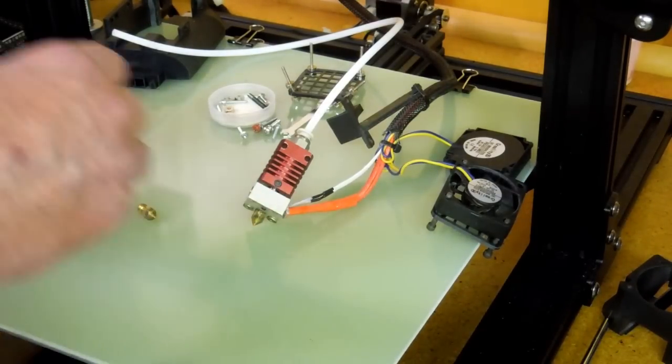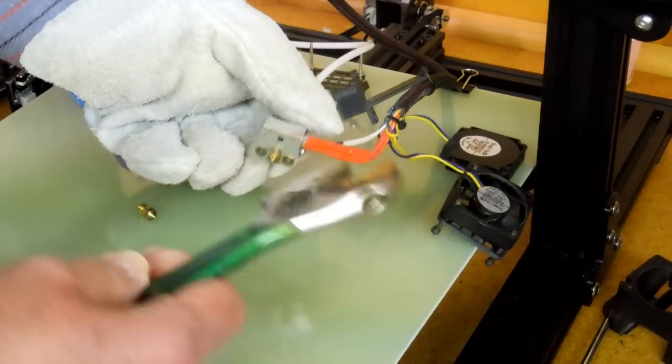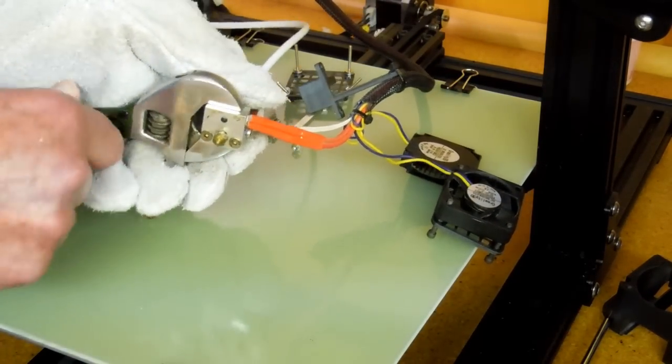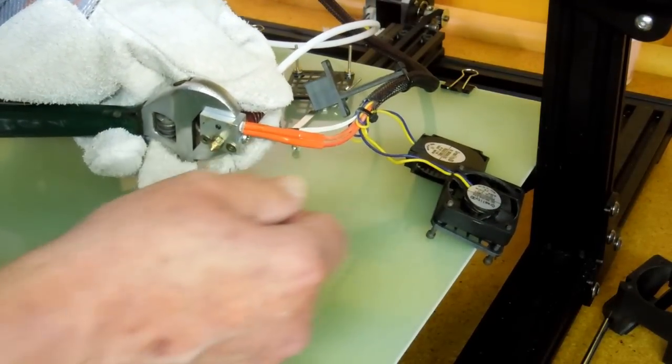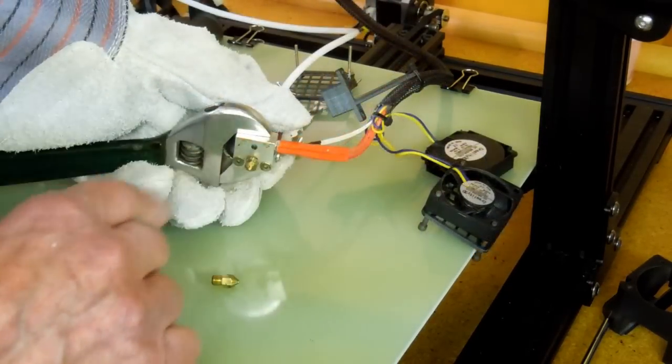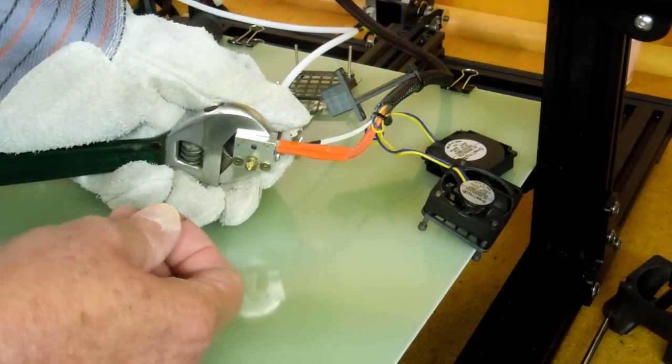When you get those pieces out of there, while this is still hot, put your wrench back on here. You want to be real careful of these wires that lead up to the thermistor and to your heater. You'll end up with some filament that's on the threads of this nozzle.